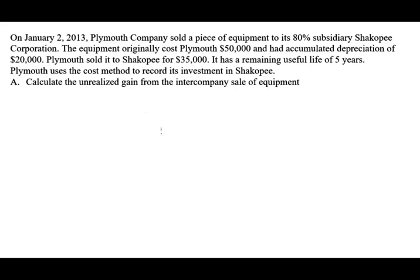On January 2nd, 2013 — make sure we are aware of the dates — P company, the parent company, sold a piece of equipment to its 80% subsidiary, S company. The equipment originally has a cost of $50,000, accumulated depreciation of $20,000, which means the book value equals $30,000. They sold it for $35,000, which means they're going to have a $5,000 gain, and it has a remaining life of five years.